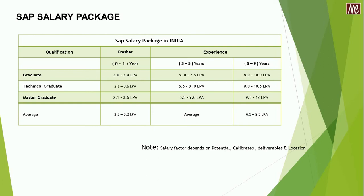Similarly, if the same graduate is experienced and comes under 3 to 5 years, then the minimum salary package can be 5 lakhs and maximum can reach 7.5 lakhs. If he or she falls under 5 to 9 years of experience, then the salary package will reach 8 lakhs minimum and 10 lakhs maximum per annum. In the case of a technical profile, the minimum salary for fresher category is 2.1 lakhs and maximum is 3.6 lakhs per annum. In the 3 to 5 years section, it would be minimum of 5.5 lakhs and maximum of 8 lakhs per annum. In the 5 to 9 years of experience section, it comes under minimum of 9 lakhs and maximum of 10.5 lakhs per annum.